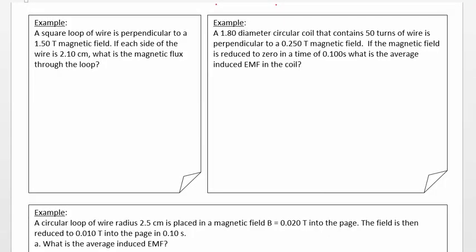Okay, so I'm going to assume that you definitely paused the video and now you're ready to see the answers. So, in this first example, we've got a square loop sitting in a field. And the sides of the loop are 2.1 centimeters or 0.021 meters across. And so to calculate the flux, this would just be equal to B times A times the cosine of theta.